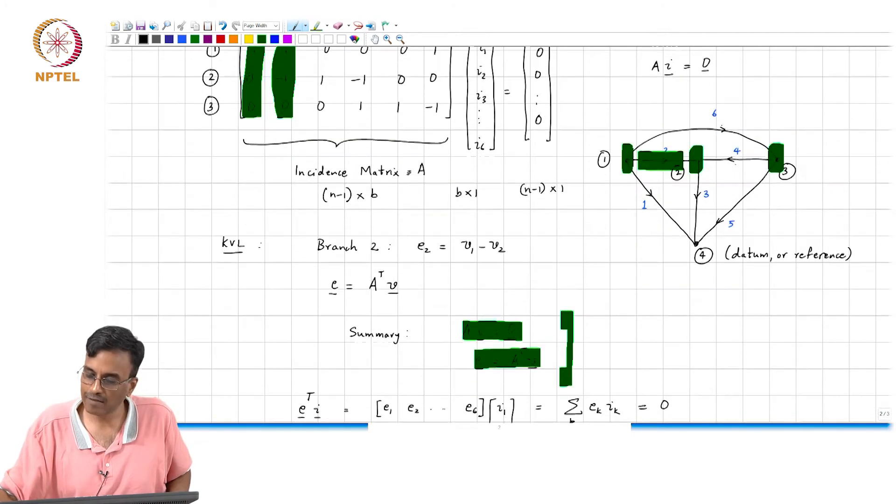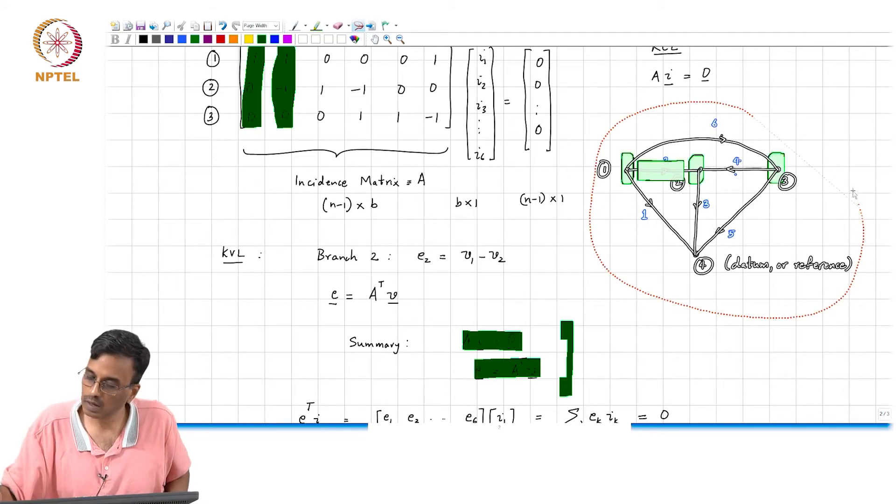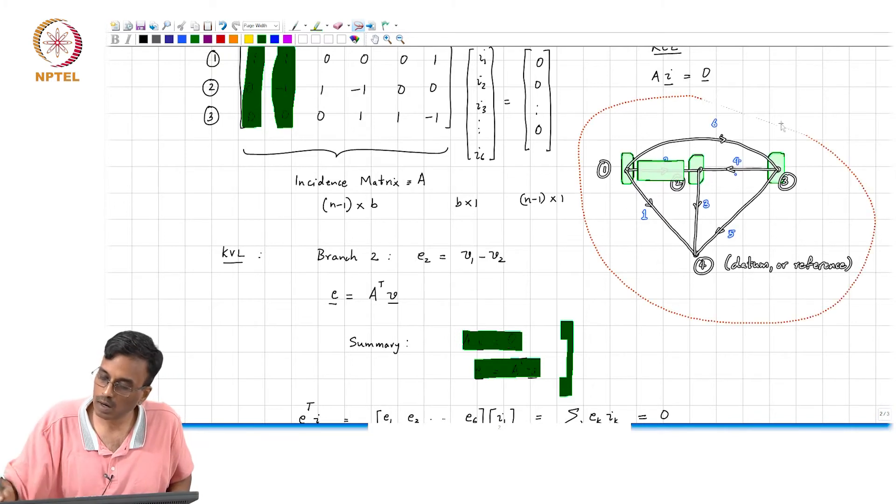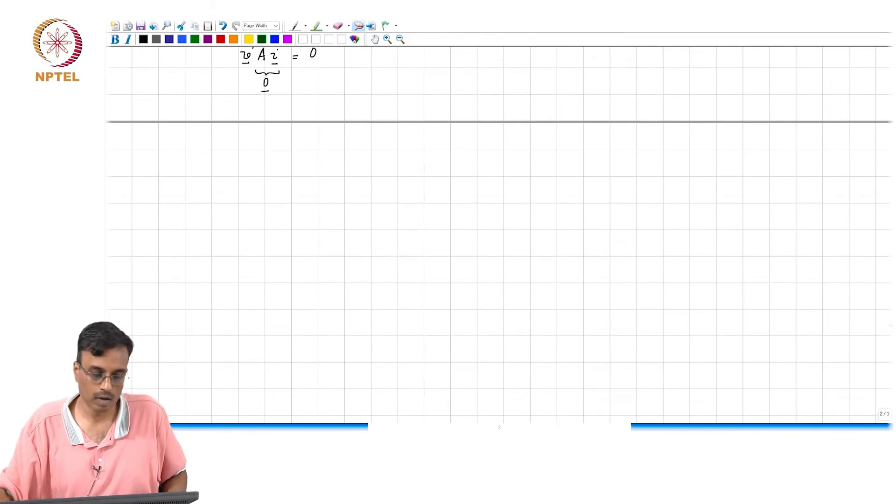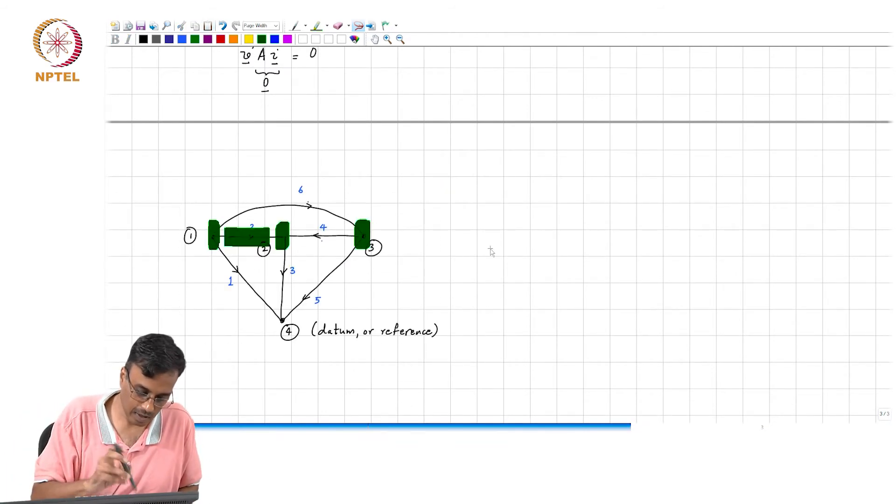So, let us say, we have one network like this. So this is, let's say, a network that we have in Chennai.